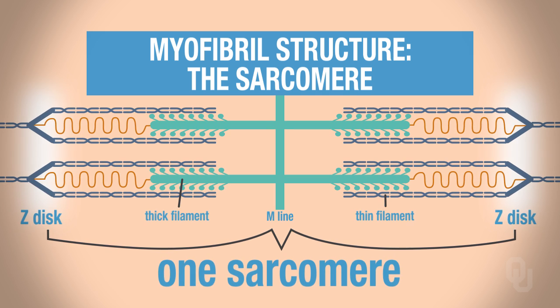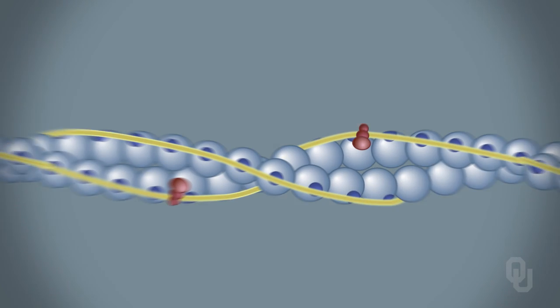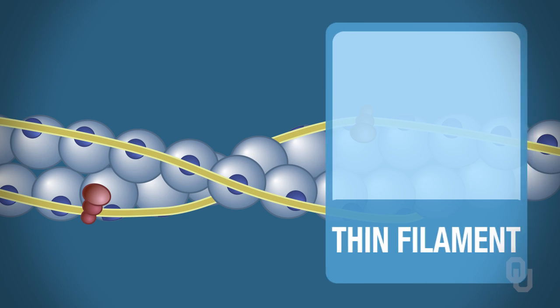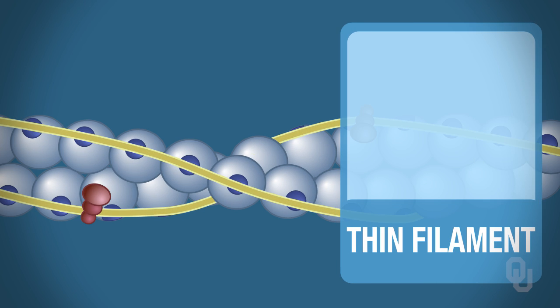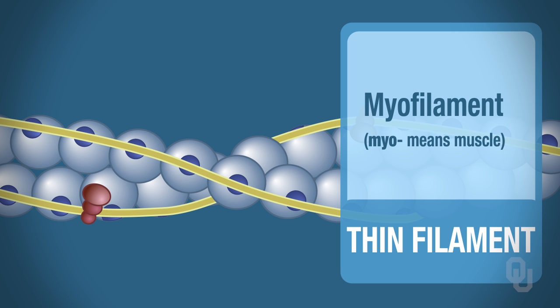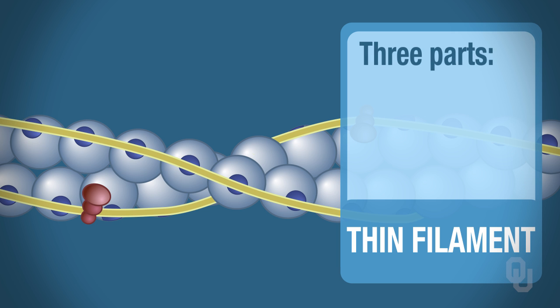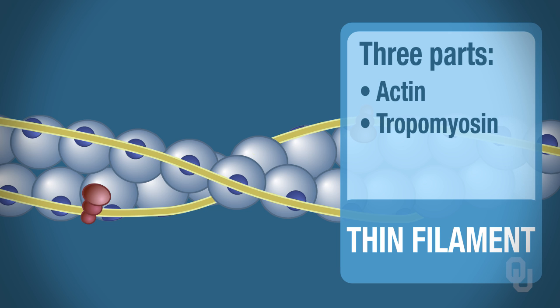As far as the thin filament goes, remember that this is a type of myofilament. Myo means muscle. There are three parts that make up the thin filament: the actin, the tropomyosin, and the troponin.